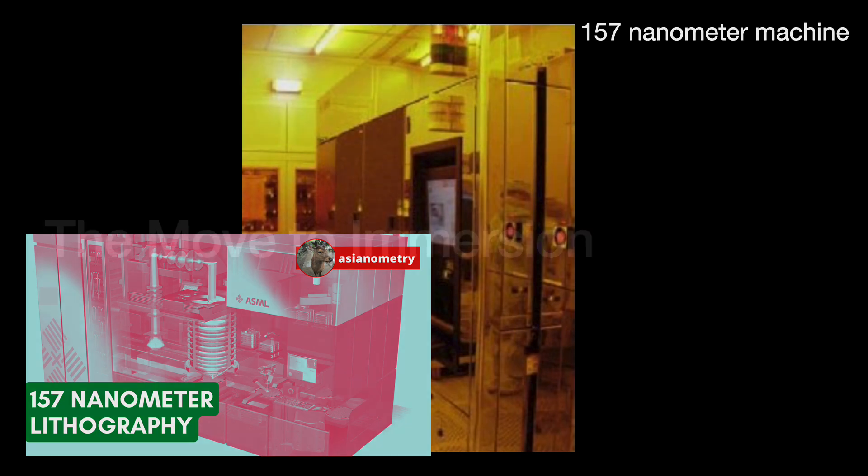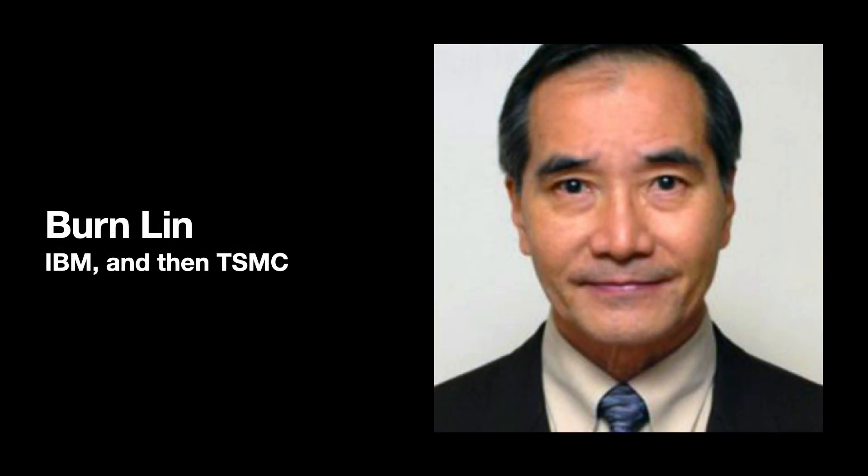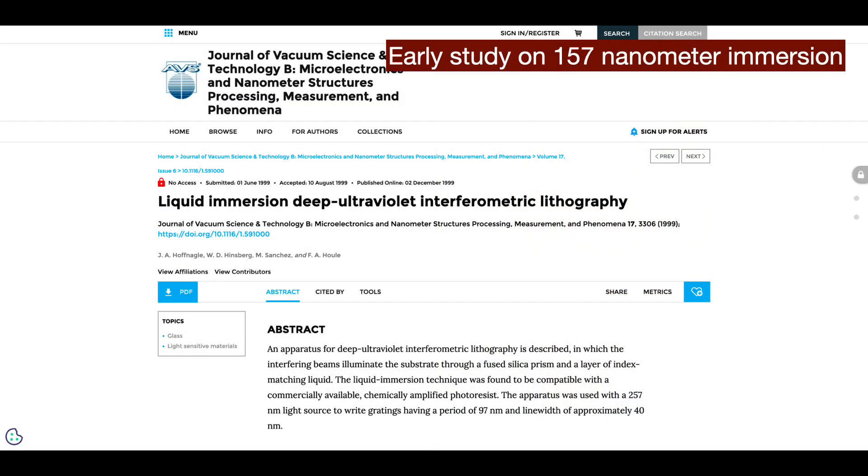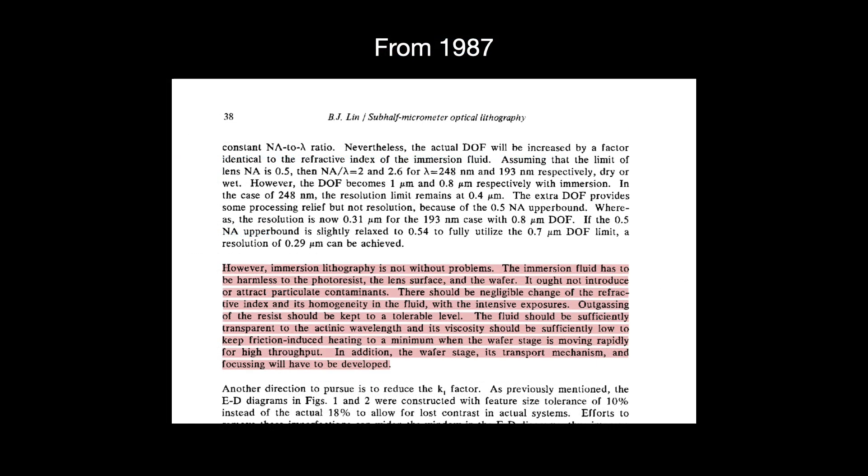In the summer of 2002, Sematech sponsored a 157 nanometer lithography workshop for the general industry. Dr. Bern Lin, now an R&D executive at TSMC, had been scheduled to do a speech there. As originally planned, the speech was to discuss immersion lithography techniques and fluids to extend 157 nanometer lithography's useful life. Several researchers had tested immersion techniques to extend 157 a few more years. Having done experiments on immersion a decade ago while at IBM, Lin was qualified to discuss the technique.